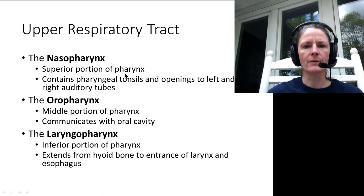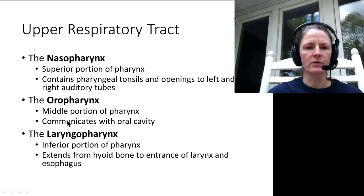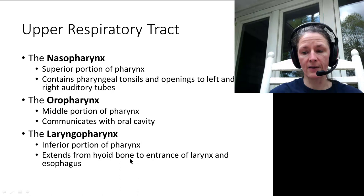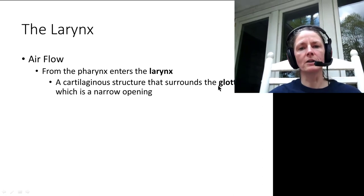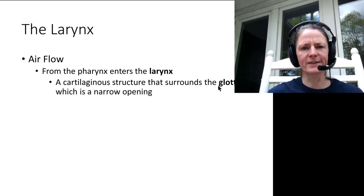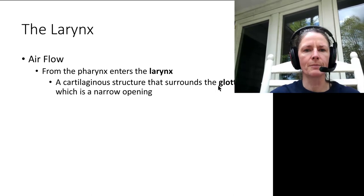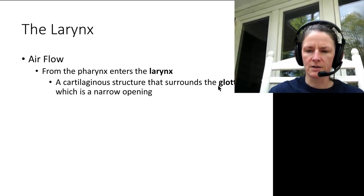The nasopharynx contains the pharyngeal tonsils and the openings of the auditory (Eustachian) tubes. The oropharynx is behind the oral cavity. The laryngopharynx is the inferior portion of the pharynx, extending from the hyoid bone to the entrance of the larynx and the esophagus. From the pharynx, air enters the larynx through the glottis. A piece of elastic cartilage called the epiglottis closes over the glottis when swallowing, preventing food and liquids from entering the trachea.